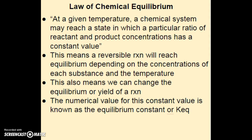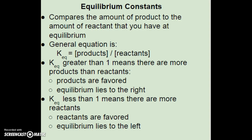The law of chemical equilibrium states that at a given temperature, a chemical system may reach a state in which a particular ratio of reactant and product concentrations has a constant value. A reversible reaction will reach equilibrium depending on the starting concentrations and temperature. We can change the equilibrium by changing concentrations, temperature, pressure, or volume. This constant value is called the equilibrium constant, abbreviated K-eq.